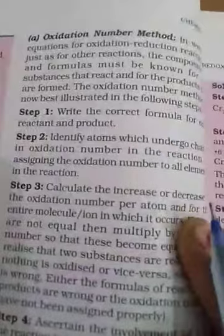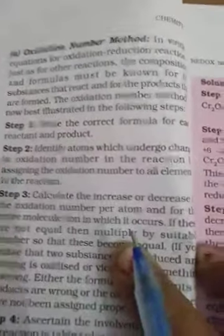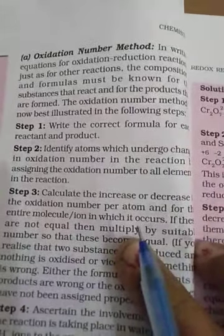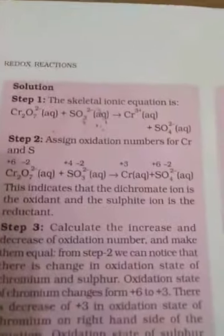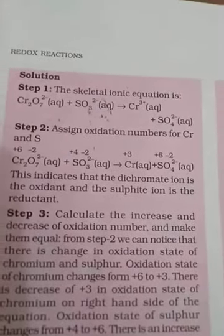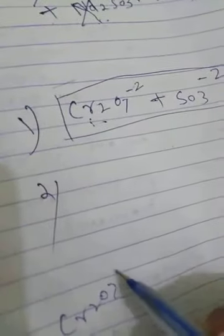Step 2: Identify atoms which undergo change in oxidation number by assigning oxidation numbers to all elements in the reaction. For Cr2O7²⁻, we find the oxidation number of chromium: 2Cr plus 7 times (−2) equals −2. So 2Cr equals −2 plus 14, giving 2Cr equals 12, therefore Cr equals +6. Oxygen is −2. So chromium's oxidation number in Cr2O7²⁻ is +6.